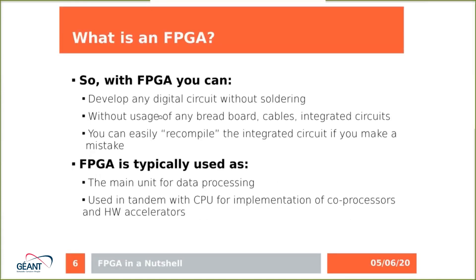With FPGA, you can develop any digital circuit without soldering — no breadboards, cables, or integrated circuits needed. If you make a mistake, you can easily recompile the whole design. The FPGA is typically used as the main unit for data processing, such as processing network data, or it is used in tandem with a standard CPU for co-processing and hardware accelerator units, for example a hardware accelerator for data compression.